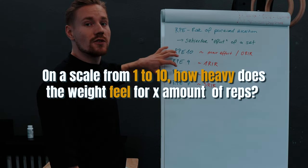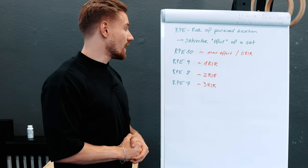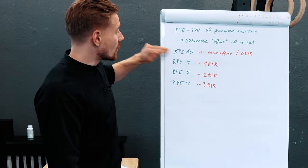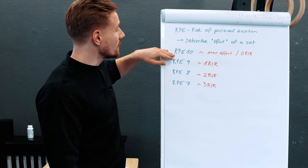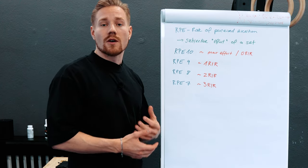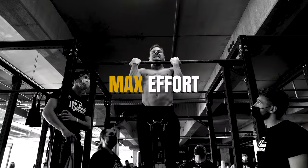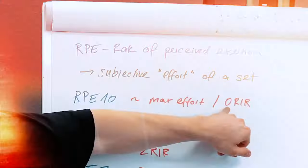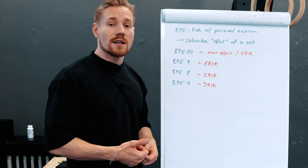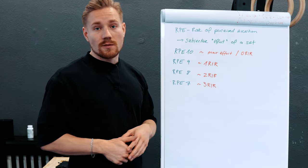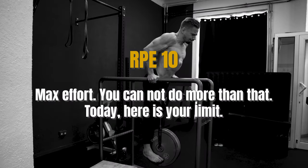Let's take a few examples from this scale. RPE 10 is at the top of the scale. If you rate a set with RPE 10, that means that set was max effort — you can't do a single additional rep, you can't do one kilogram more. Really max effort, that was the best you could do on that day.